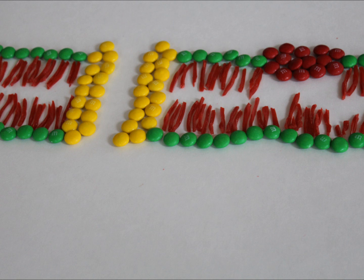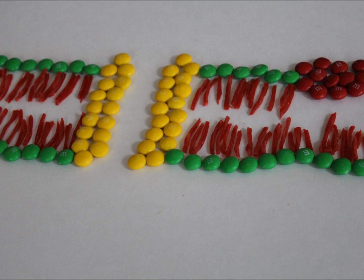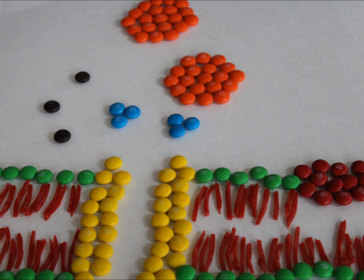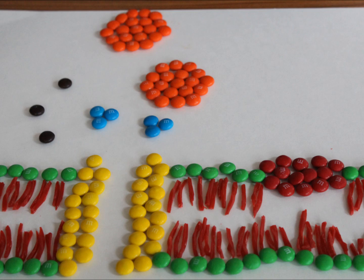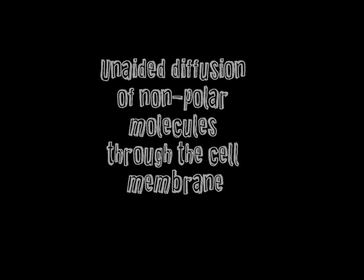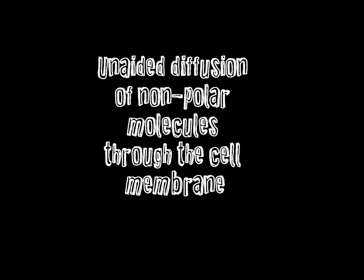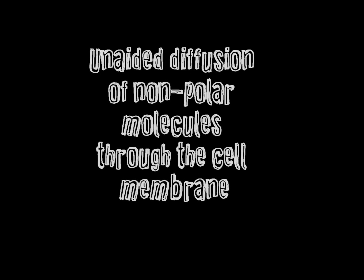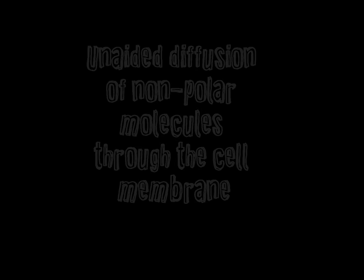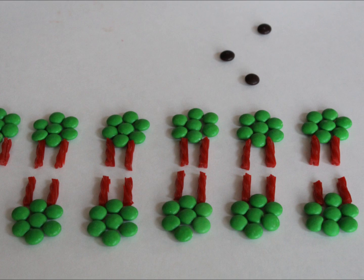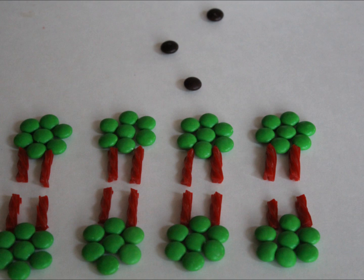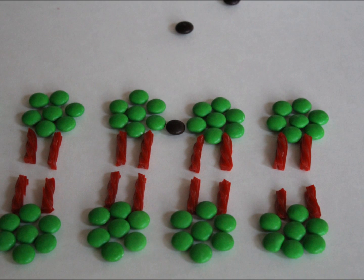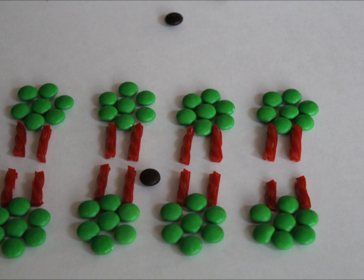Unaided diffusion, also known as simple diffusion, occurs through the cell membrane or a channel protein. Small nonpolar substances are able to pass through the cell membrane without ATP or a protein being required.